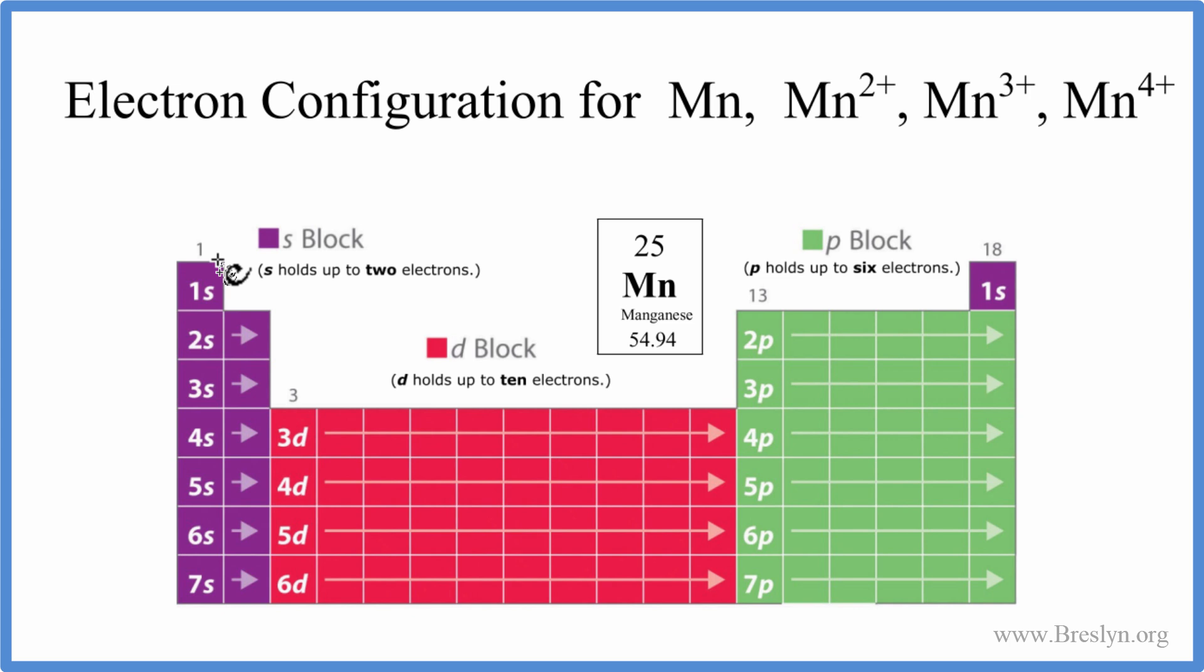So we'll start with our 1s. We have 1s1, 1s2, because s orbitals can hold up to two electrons. We'll put two in there. From 1s, we go to 2s. We have 2s1, 2s2. We've used four electrons.